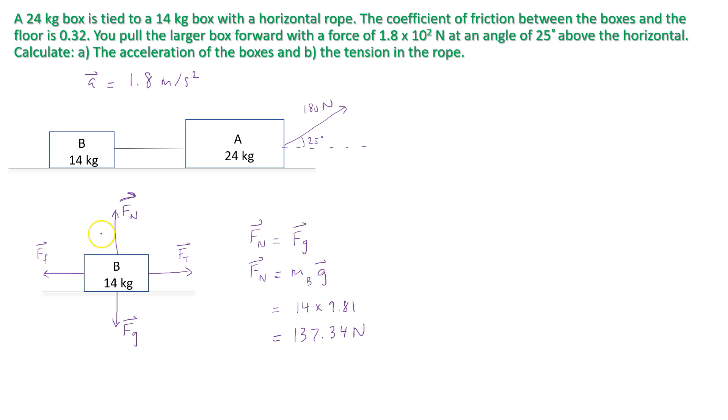Now what I'm going to do is I'm going to write an F net statement for the horizontal motion of the box. So F net x, along the horizontal,